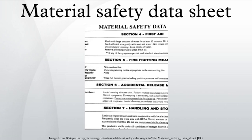Section 8, Exposure Controls/Personal Protection. 8.1. Control Parameters. 8.2. Exposure Controls. Section 9, Physical and Chemical Properties. 9.1. Information on Basic Physical and Chemical Properties. 9.2. Other Information.